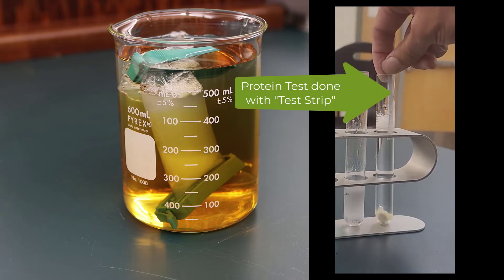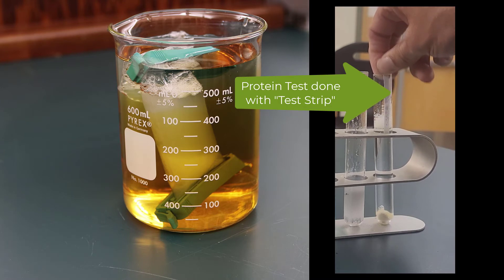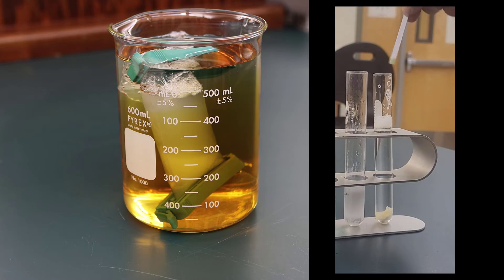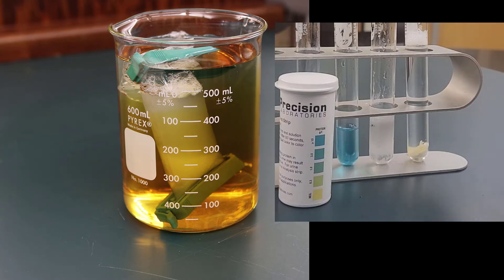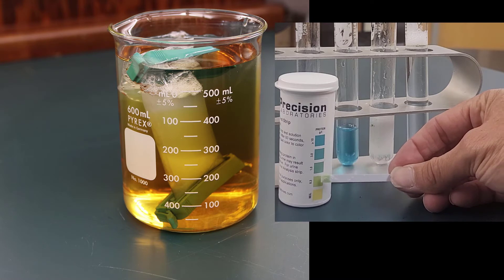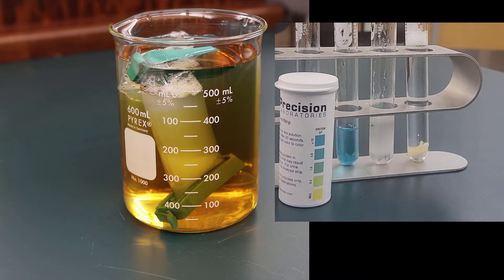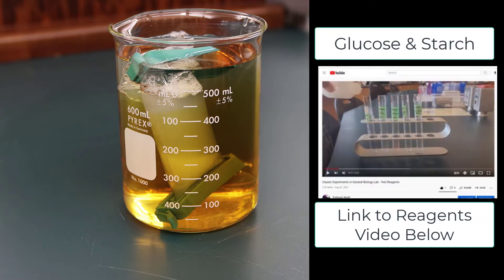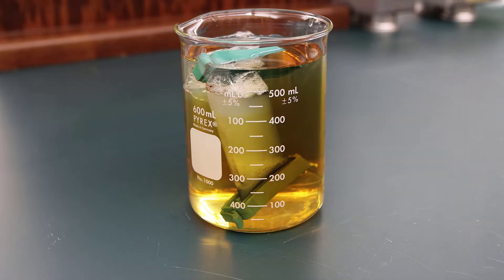For protein, we're going to use these protein test strips which change color based on the concentration of protein. If we dip that inside our solution, we can see how much protein we have, and based on the color you match it - that tells you whether you have protein or not. The other two tests - starch and glucose - we've done before, and if you need a refresher I will put a link up for that video.